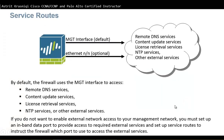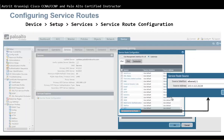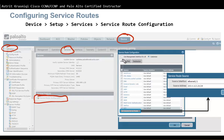By default, the firewall uses the management interface to access remote DNS servers, content update services, license retrieval services, NTP services, and all other external services. If you do not want to give external network access to your management network, you must set up an in-band data interface to provide access to required external services and configure a service route to tell the firewall which interface to use. To do this, go to Device, Setup, Services, Service Route Configuration, select Customize, choose the service, and select the interface.